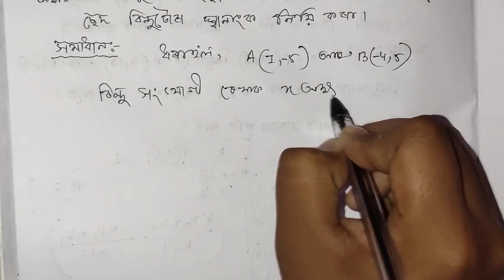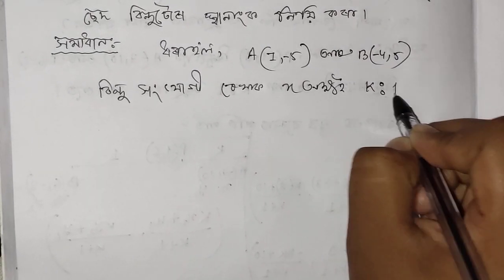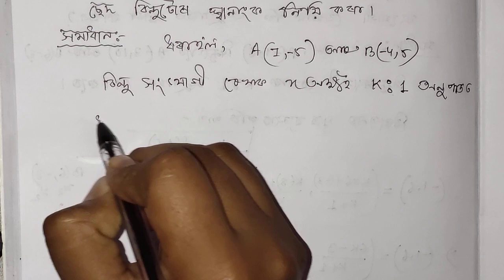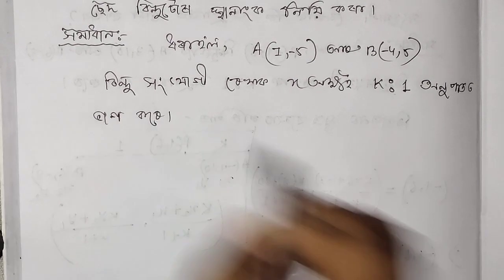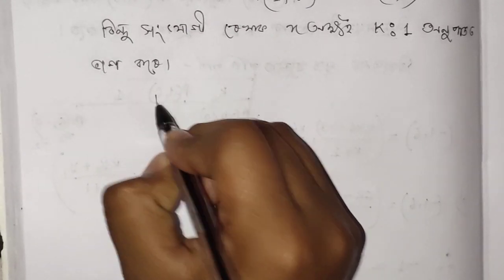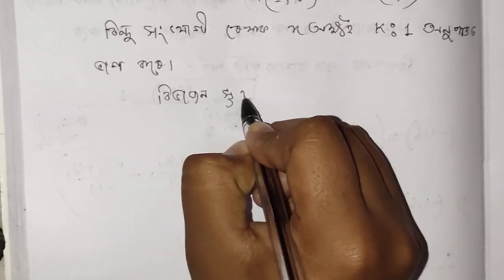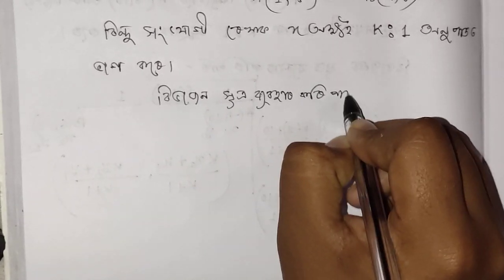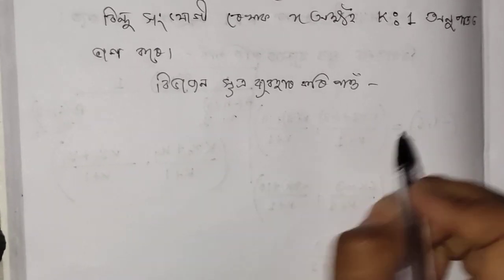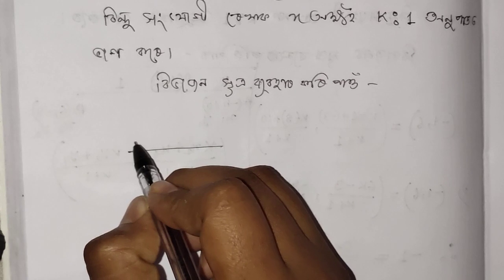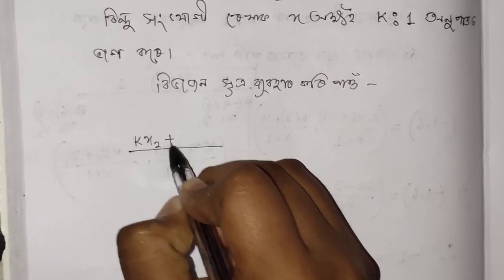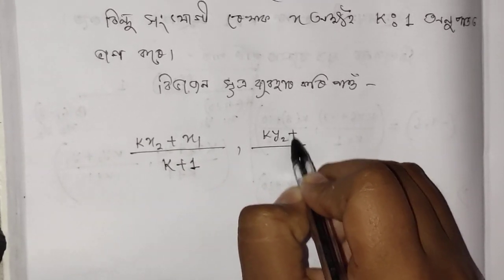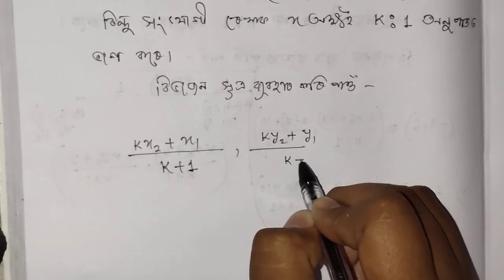Let the point divide AB in the ratio k:1. Using the section formula, the coordinates of the dividing point are: x = (x2·k + x1) / (k + 1), and y = (y2·k + y1) / (k + 1).